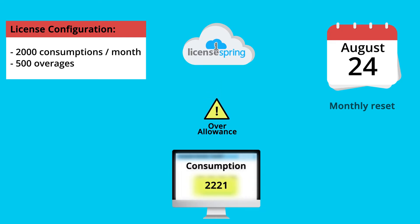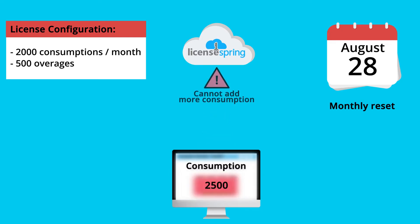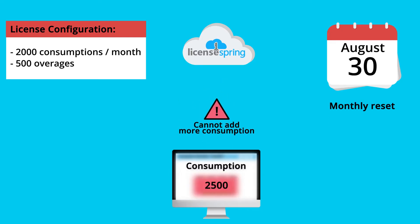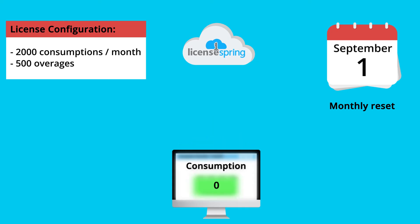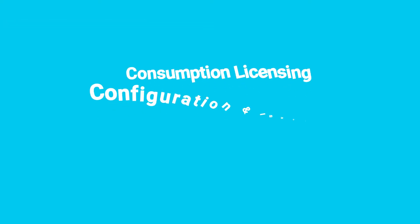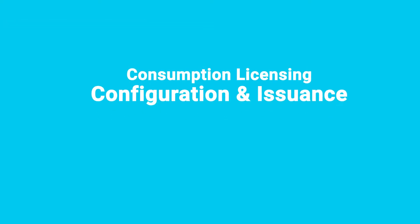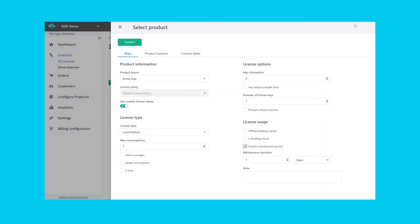For example, LicenseSpring supports the configuration of overages as well as periodic allowance resets. There are two ways a software vendor can issue entitlements that provide metered usage: the first one is at the license level, and the second one is at the feature or component level.